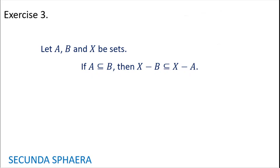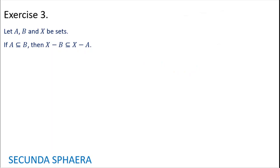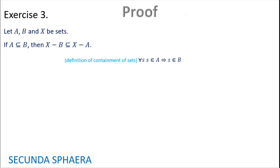Let A, B, and X be sets. If A is contained in B, then X without B is contained in X without A. In this case it is an implication with the conclusion being a containment, so we are free to suppose that A is contained in B. We are going to start with the definition of that containment: for all s, s in A implies s in B.